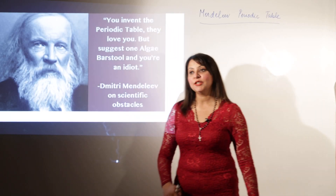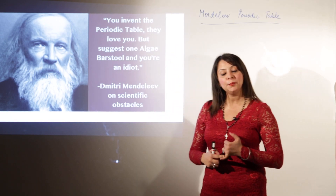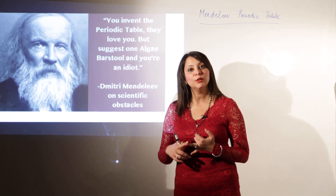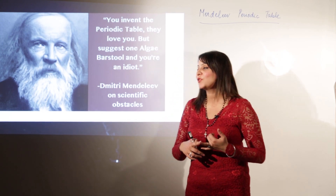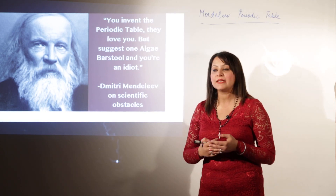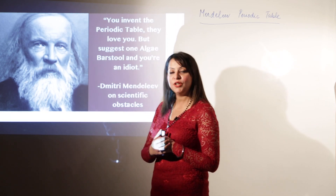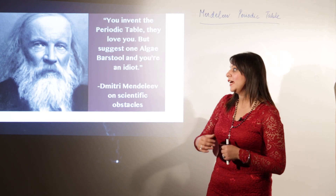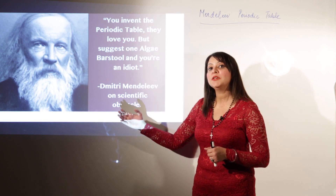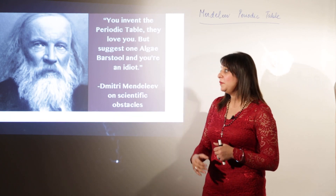We know that the attempt of classification was made first by early chemists, then Döbereiner came, and after that there was an attempt made by Newlands on the basis of musical notes. These classifications somehow failed. The next attempt that made history in chemistry was done by Dmitri Mendeleev, who was a professor of chemistry at Petersburg University.